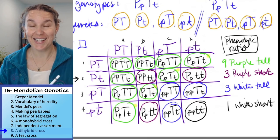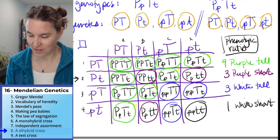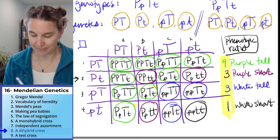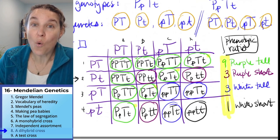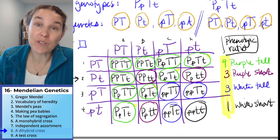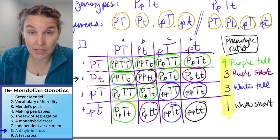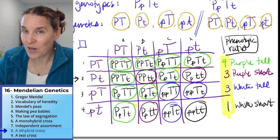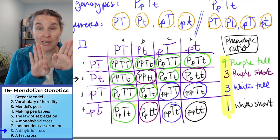I've got good news for you. This ratio, 9, 3, 3, 1. You can do the entire Punnett square, or you can say, guess what? I know the phenotypic ratio is 9 to 3 to 3 to 1. Nine showing both dominant traits, one showing both recessive traits, and 3 each showing a dominant and a recessive.